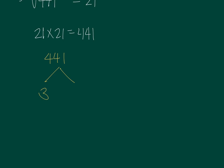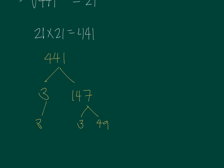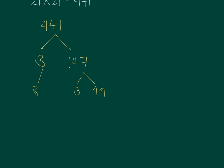147. And then? Divide by 3 again. You get 49. 49, and then? You get 3 and 3. No, 49 is 7 and 7.